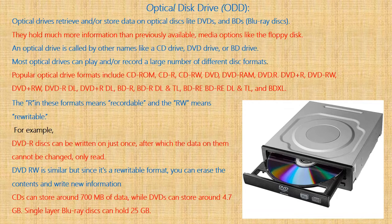On a DVD-R, we can write data only one time — once written, it cannot be erased. On DVD-RW, we can rewrite data — we can write, remove, and rewrite repeatedly. The storage capacity of a CD is 700 MB, a DVD holds 4.7 GB, and a Blu-ray disc can hold 25 GB.